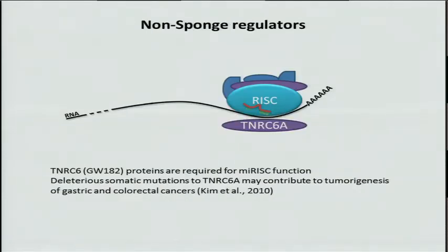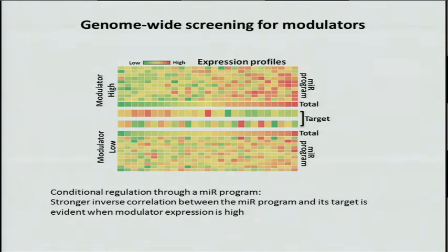TNRC6A is an example of a non-sponge regulator. It is required for miRNA function at targets, and mutations in this protein have been shown to contribute to tumorigenesis. So we are interested in identifying these things on a genome-wide basis, and this cartoon illustrates the main idea of our method.